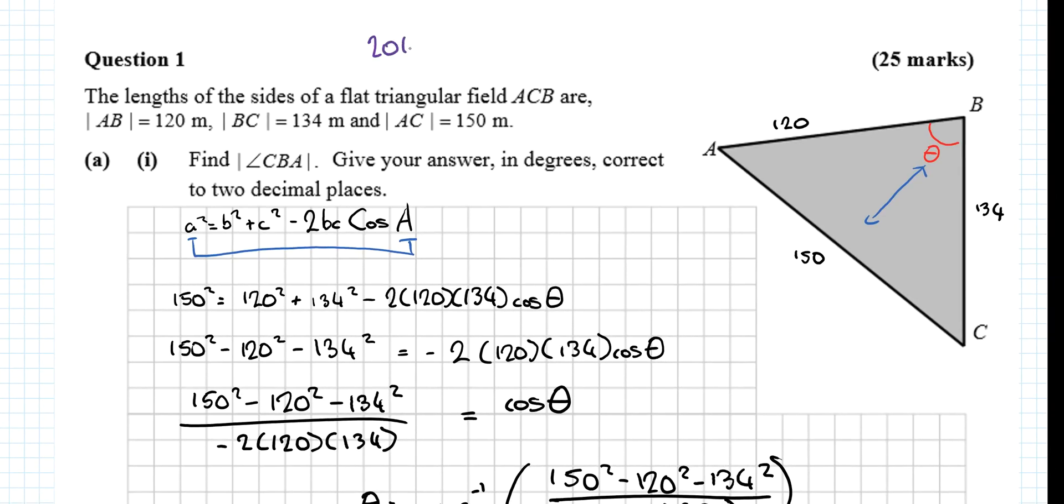So here we're looking at 2014 Leaving Certificate Higher Level Maths SEC Paper 2, Question 1. The lengths of the sides of a flat triangular field ACB are AB = 120 m, BC = 134 m, and AC = 150 m.